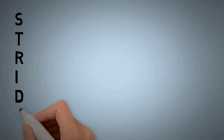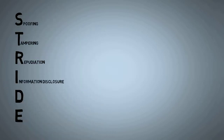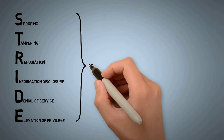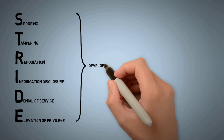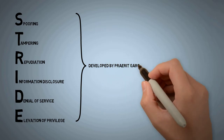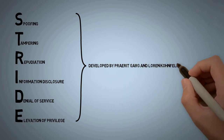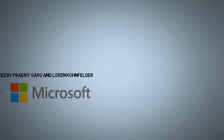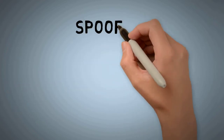STRIDE is an acronym standing for Spoofing, Tampering, Repudiation, Information Disclosure, Denial of Service, and Elevation of Privilege. Praerit Garg and Lauren Kohnfelder developed it at Microsoft as a threat-centric model, as the word STRIDE provides a valuable mnemonic for six common threats. Let's break these threats down one by one.